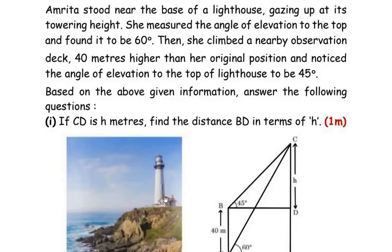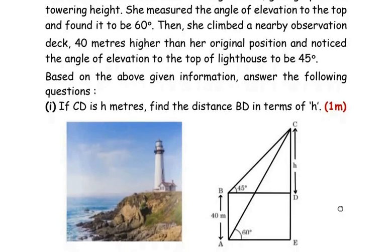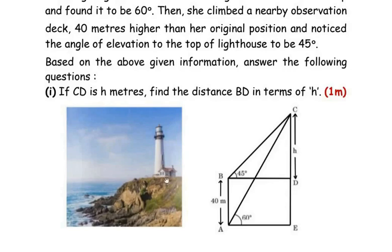Amrita stood near the base of a lighthouse gazing up at its towering height. She measured the angle of elevation to the top and found it to be 60 degrees. Then she climbed to a nearby observatory deck 40 meters higher than her original position and noticed that the angle of elevation to the top of the lighthouse was 45 degrees. If CD is h meters, find the distance BD in terms of h.